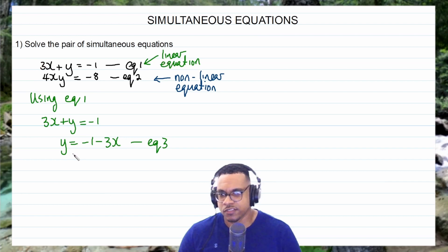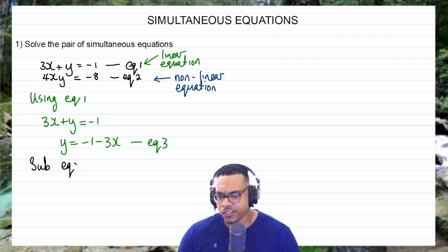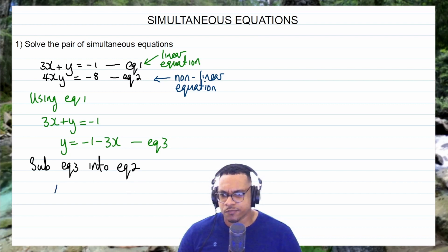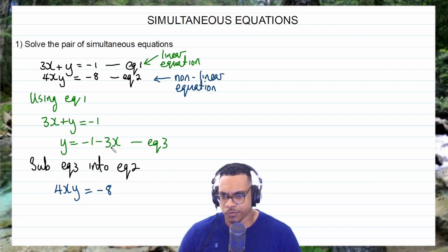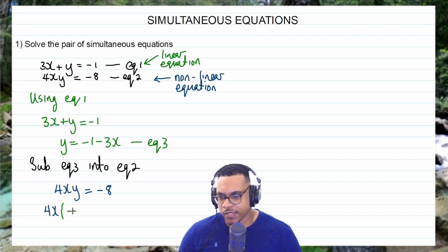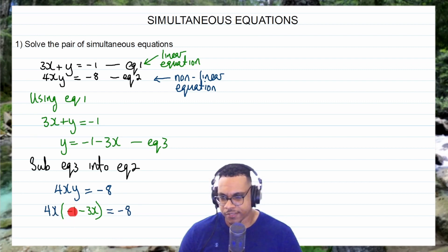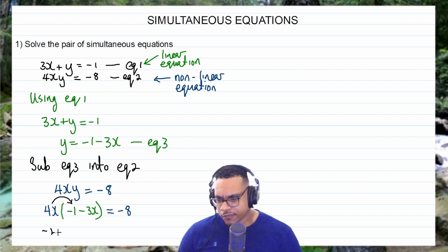Now I'll substitute equation 3 into equation 2, the non-linear equation. Equation 2 reads 4xy equals negative 8. Replacing y with (negative 1 minus 3x) gives 4x(negative 1 minus 3x) equals negative 8. Expanding: 4x multiplied by negative 1 gives negative 4x, and 4x multiplied by negative 3x gives negative 12x squared. So we have negative 4x minus 12x squared equals negative 8.